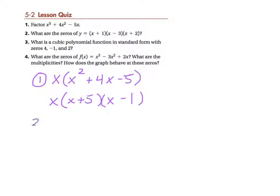Next one, number two. What are the zeros of that function that's written out? Well, that's easy. We just take each one and basically set it equal to zero. So x plus 1 equals 0 means x equals negative 1. x minus 3 equals 0 means x equals 3. And x plus 2 equals 0 means x equals negative 2. So the zeros for this one would be negative 2, negative 1, and 3.